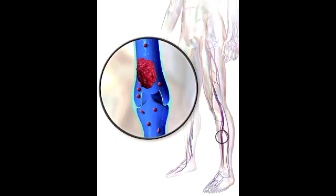What is Virchow's triad that predisposes you to getting deep vein thrombosis? Deep vein thrombosis occurs if you have any of these predisposing conditions, such as blood stasis, in which the blood is not moving properly and is sitting still for a longer period of time. This can lead to clot formation.